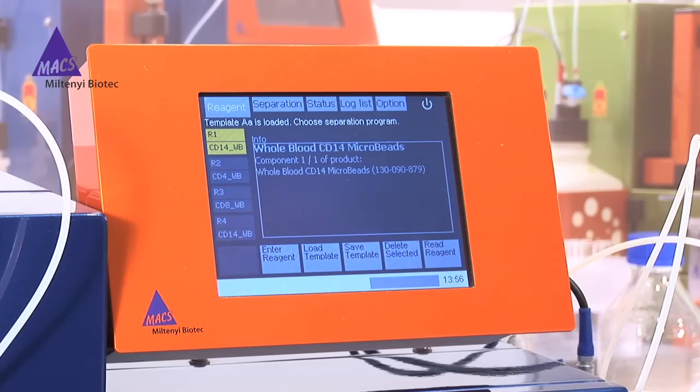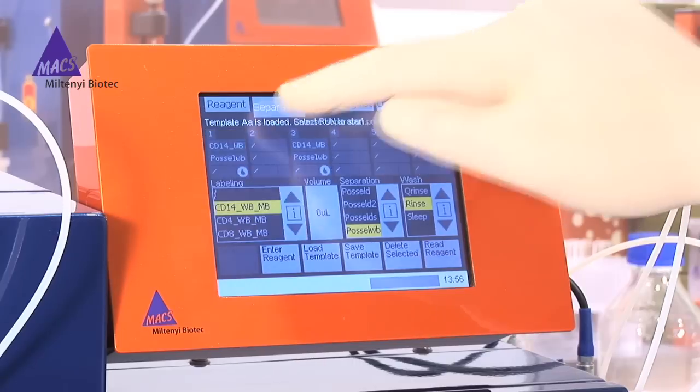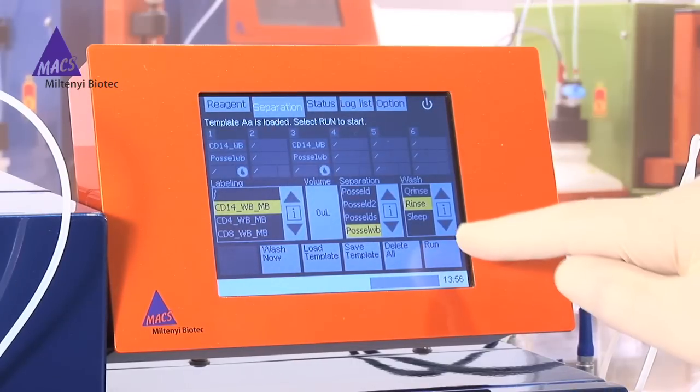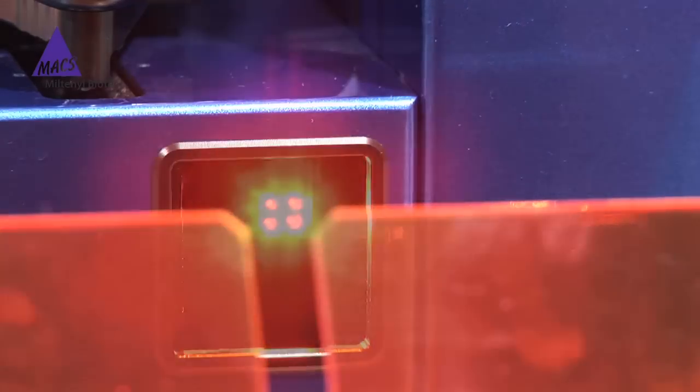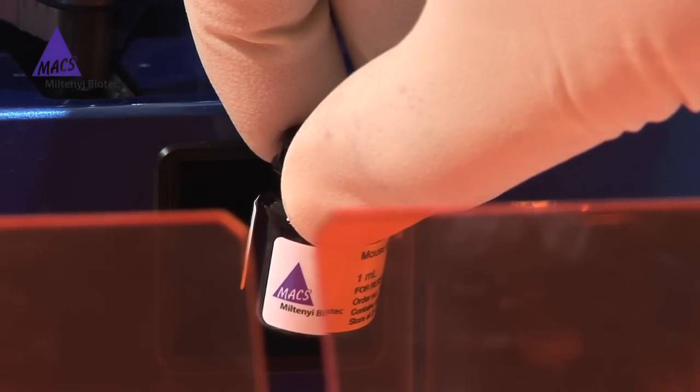In this example, we will isolate CD14 positive cells in three easy steps. First, scan the reagent using the barcode reader on the instrument and place the reagent on the reagent rack.